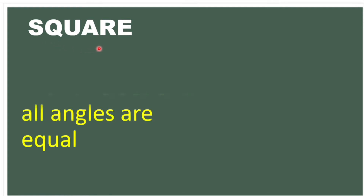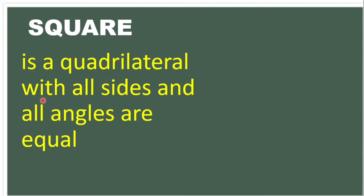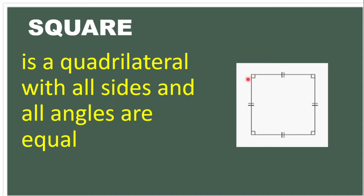Next we have the square. A square is a quadrilateral with all sides and all angles equal. It has the same properties as the rectangle and the rhombus. The angles are equiangular, and a square is also an equilateral quadrilateral.